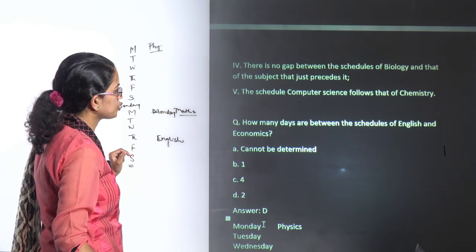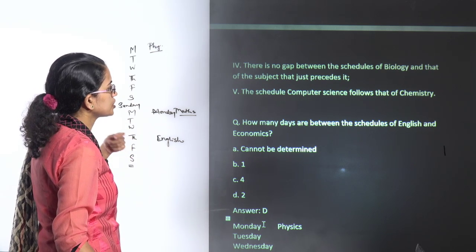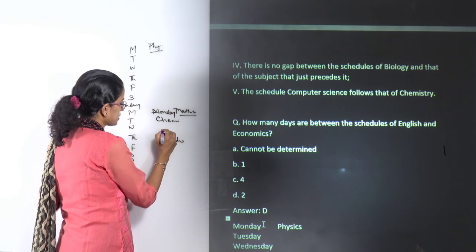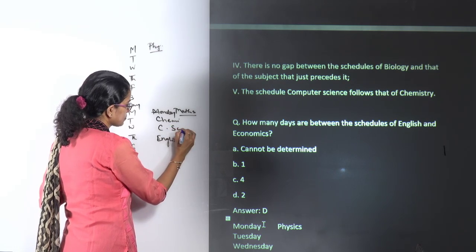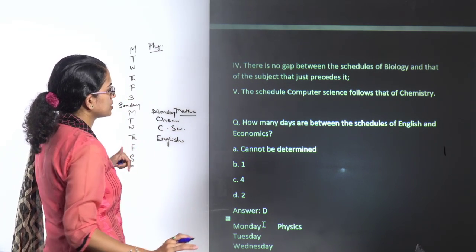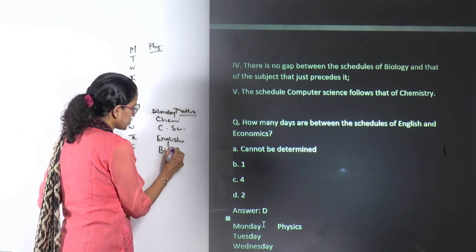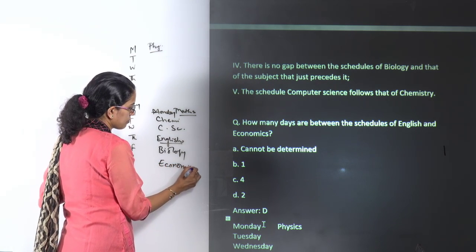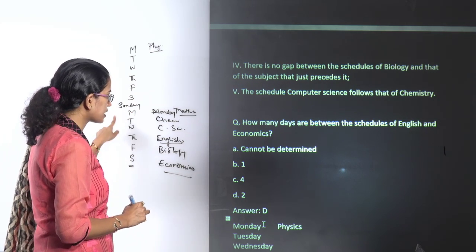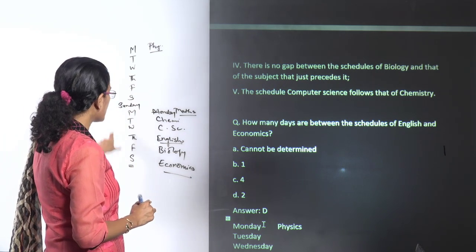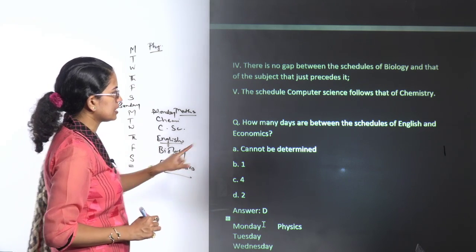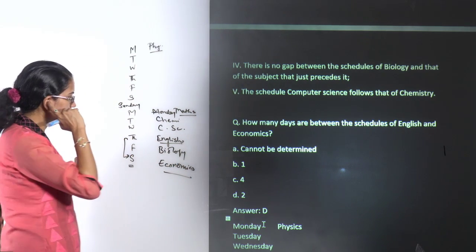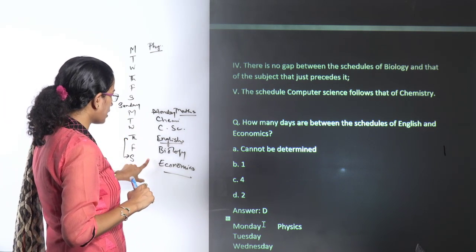There is no gap between biology and the subject that precedes it. Computer science follows chemistry. There is no gap between biology and the subject before it, so biology has English before it. The last paper is economics, since one week has to be continuous. The question asks how many days between English and economics — the answer is two days.